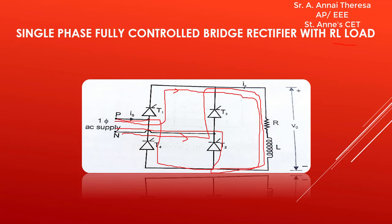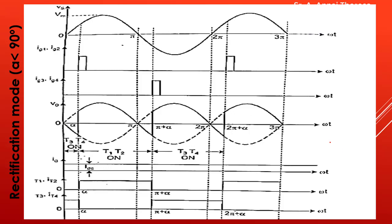We can explain the operation through this waveform. This is the input AC voltage. At angle alpha, we trigger the thyristors T1 and T2. During this duration, T1 and T2 will conduct and the output follows the input. This reversal of voltage is because of the inductance effect, as I have already explained.